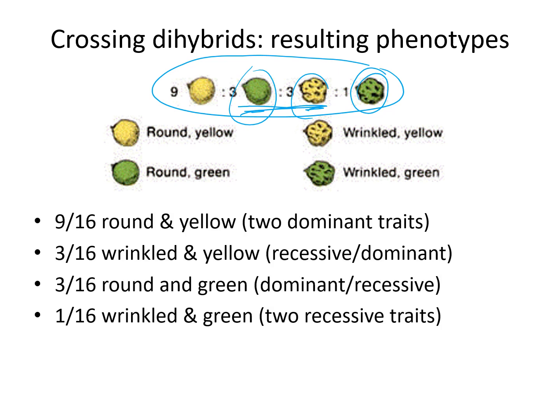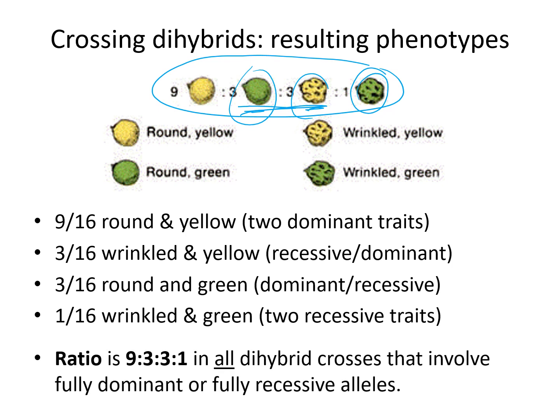These are our genotypic ratios, and for all dihybrid crosses we're going to get this same ratio, because we'll always have the same combination of recessive and dominant genes. We always end up with nine to three to three to one assuming we are doing a dihybrid cross.